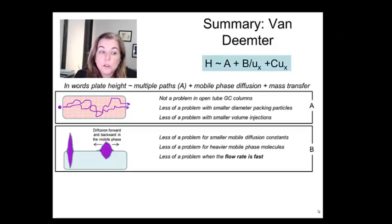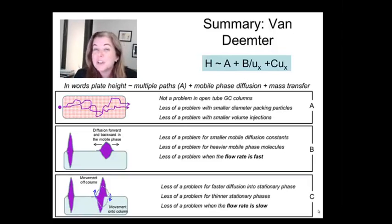Then we had term B which was basically mobile phase diffusion. And what that is saying is that as a function of time things diffuse. And what we're going to want to do is get the peak through the column as fast as we can so that diffusion is minimized. And finally term C was the mass transfer term which says that you need to allow for good equilibration between the mobile and the stationary phase. And if you do that you're going to be able to get much narrower peaks. But to do that you have to go slow. So we have these two contradictory terms.